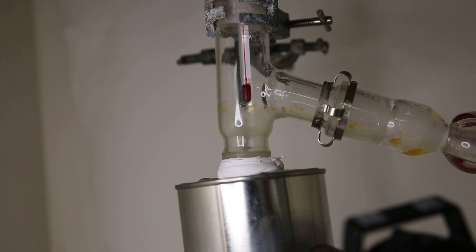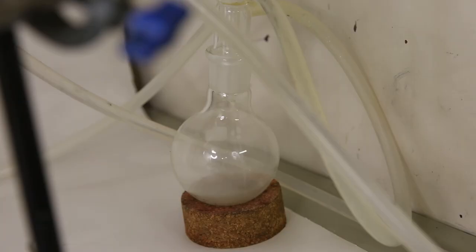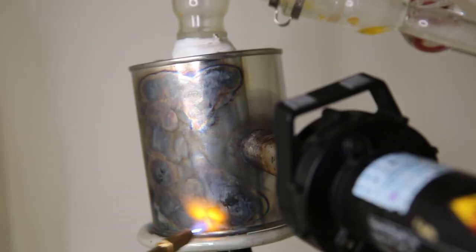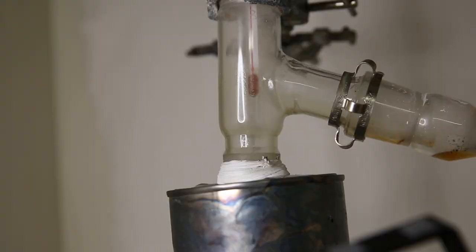After a while some vapors start to come over and we can see an orange liquid condensing. We can also see a stream of vapors and some orange liquid flowing into the receiving flask. Since the reaction is going pretty slow I help it with another torch and put a heat gun against the side of the can. We can see that it has an effect and a lot more vapors start coming over. It also went a little bit crazy but it's not much of a problem.